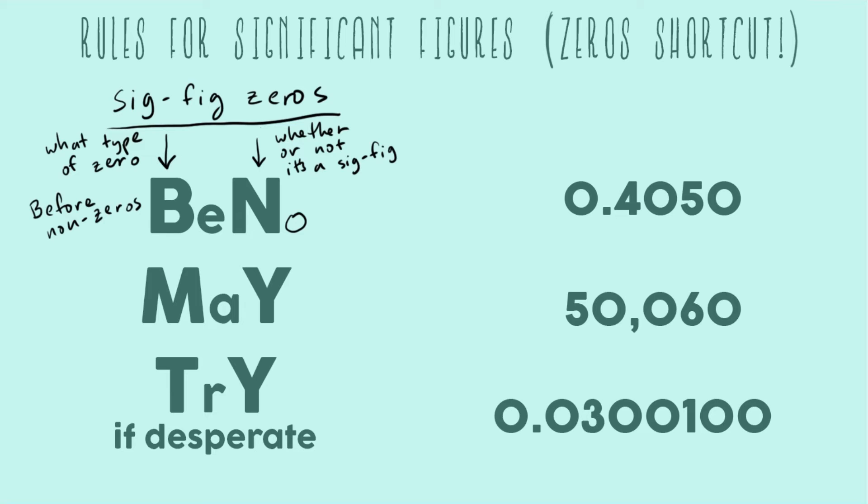And so next we're talking about the middle of non-zeros. Any zero in the middle of two non-zeros. And for these the answer is yes. You are always a sig fig if you are a zero in the middle of two non-zeros.